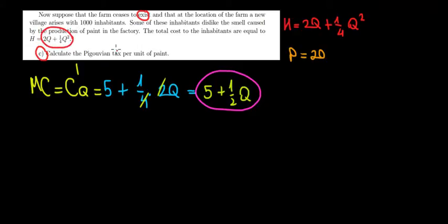What's going to be the Pigouvian tax? What's the intuition here? We have another external cost because the people don't like the smell. So H is the external cost. The Pigouvian tax must lead the company to produce optimally for this society. How can it do so?